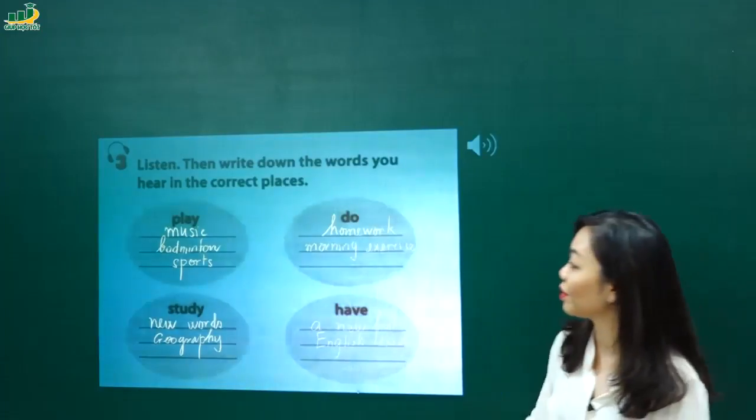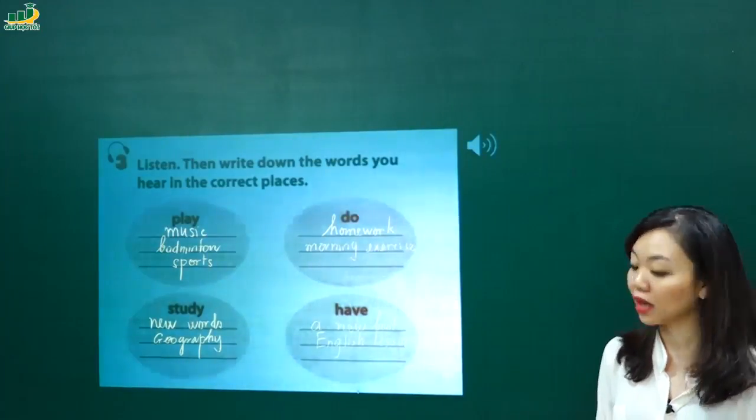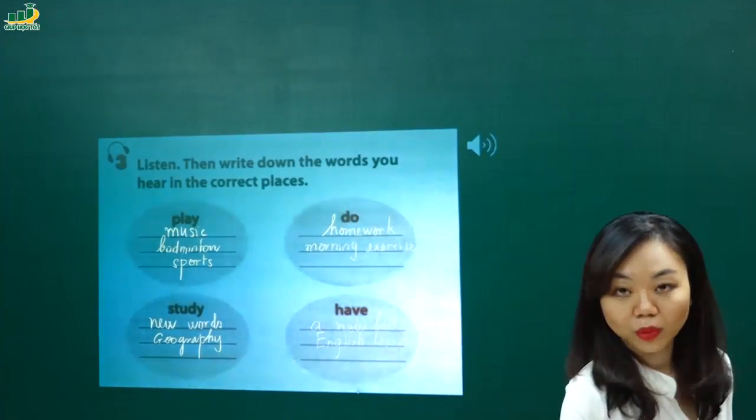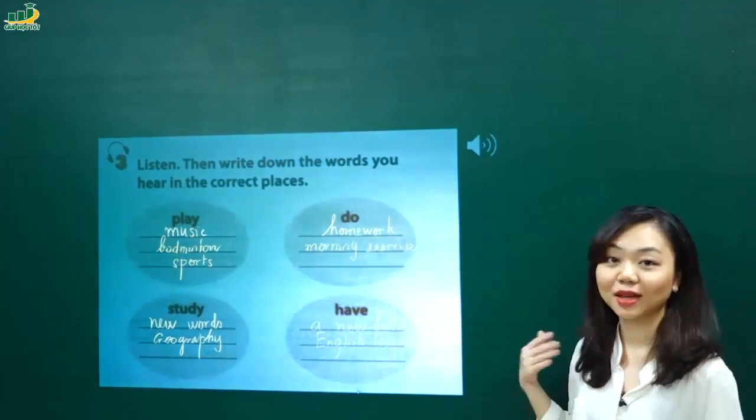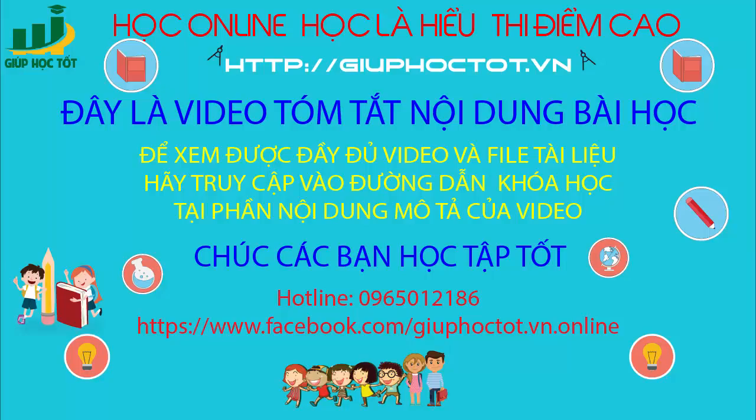Ok. Xong. Như vậy là mình đã điền được hết những cái từ đi với các động từ ở trong 4 nhóm khác nhau rồi đấy. Cô đọc lại nhé. Play music, play badminton, play sports. Do homework, do morning exercise. Study new words, study geography. Have a new book, have English lessons. Ok. Good. Rồi. Rất tốt. Bây giờ các em sẽ chuyển sang một cái phần ôn tập mới là phần ngữ pháp.